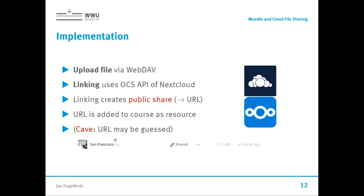What happens in the background is that the OCS API creates a public share in NextCloud — a randomly generated URL that is hard to guess. This link is then stored in Moodle. There is no listing of public URLs in an OwnCloud directory, but it's always possible to guess the URL, or the first student to access the file through Moodle will know the URL and could pass it on. So this is strictly not intended for content that must remain private within your course.